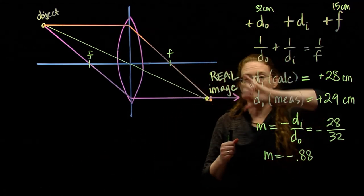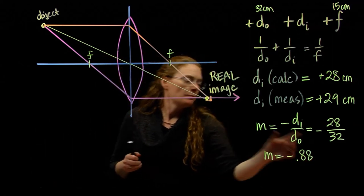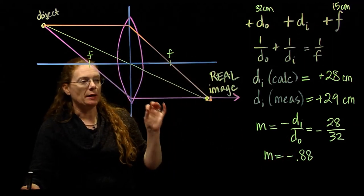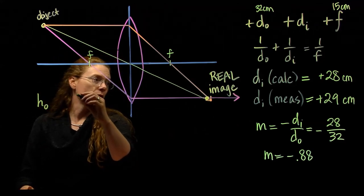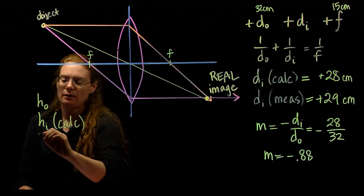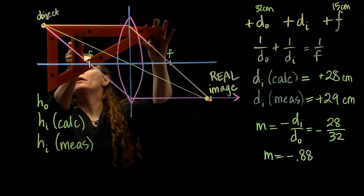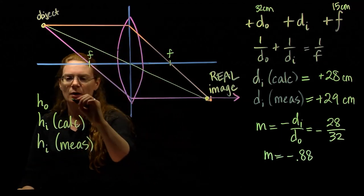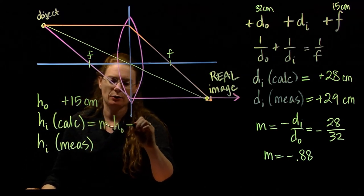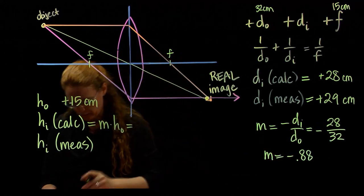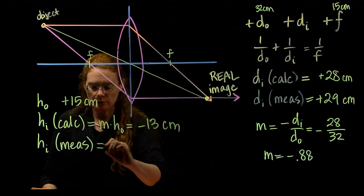So if my object's above the axis, my image should be below. Good. And the 0.88, the magnification is less than 1, which means my image should be smaller than my object. HO is not measured yet. So I can calculate HI, and I can measure HI. So how tall is this thing? The height is about 15 centimeters. It's positive because it's above the axis. HI calculated, that's magnification times HO, negative 0.88 times 15. I get a negative 13 centimeters.